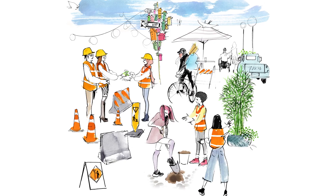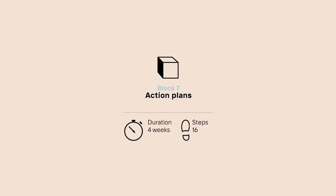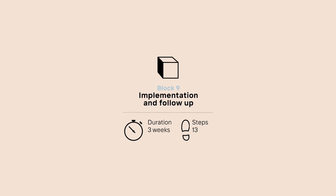Phase 3: Implementation. It includes Block 7: Action Plans, where the plan for the public space is set through a participatory process similar to a client-architect meeting. Block 8: Sharing Results communicates the results with the community, decision-makers, and a wider audience. Block 9: Implementation and Follow-up aims to gather feedback on the process from participants, follow up on the implementation, and provide an overall evaluation of the quality of the public space six months after construction.